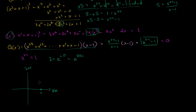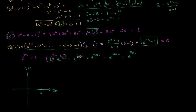You can keep adding 2 pi: 1 also equals e to the 4 pi i, e to the 6 pi i, e to the 8 pi i, and so on. To find the 24th roots, you raise all of these to the 1 over 24, which means you divide each exponent's angle by 24.